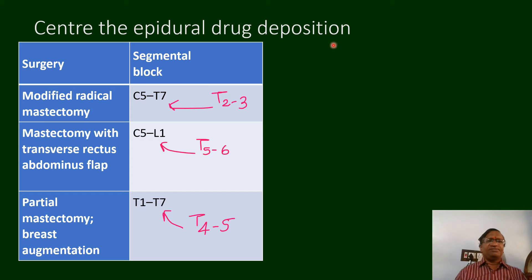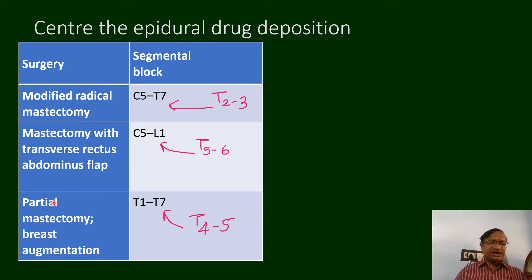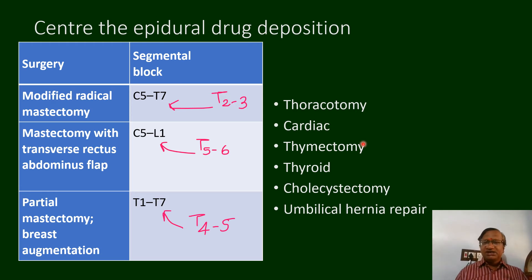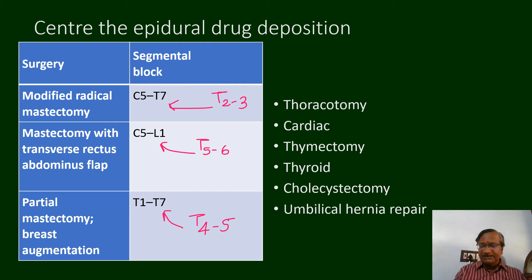Center the epidural drug deposition on the nociceptive site. For radical mastectomy, keep the catheter at T3; for modified mastectomy or TRAM flap, center around T6; for partial mastectomy, T4-T5. For umbilical or kidney repair, the nociceptive site is T10, so insert the catheter at T9-T10 — you are centering your epidural on the nociceptive stimulus.